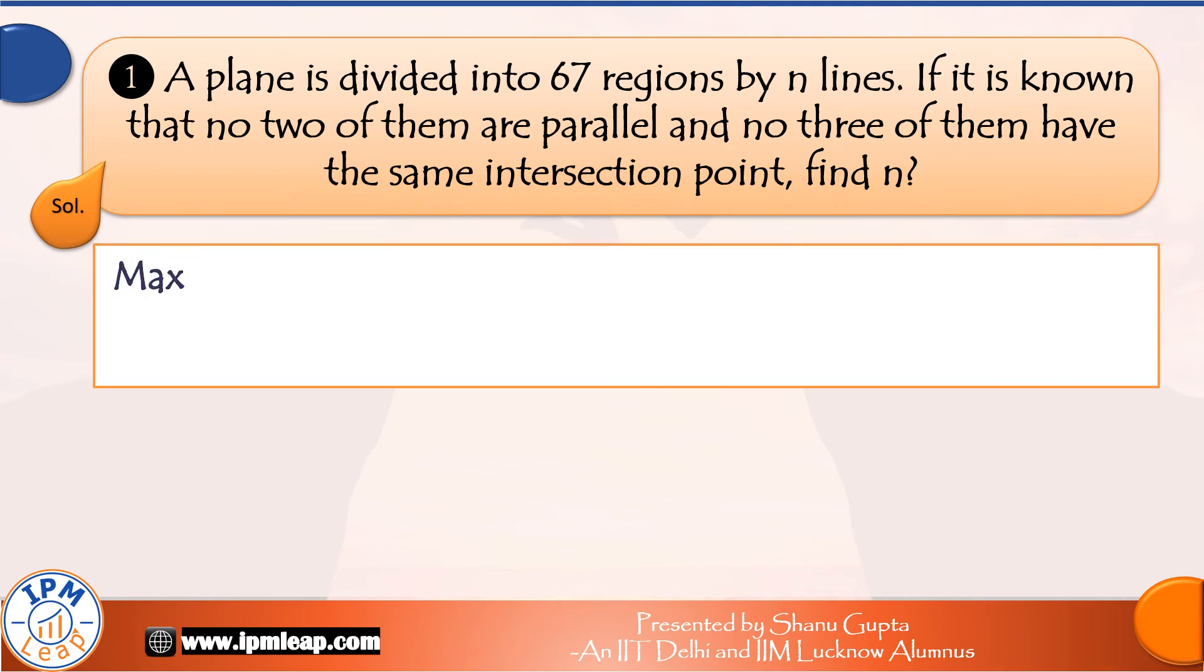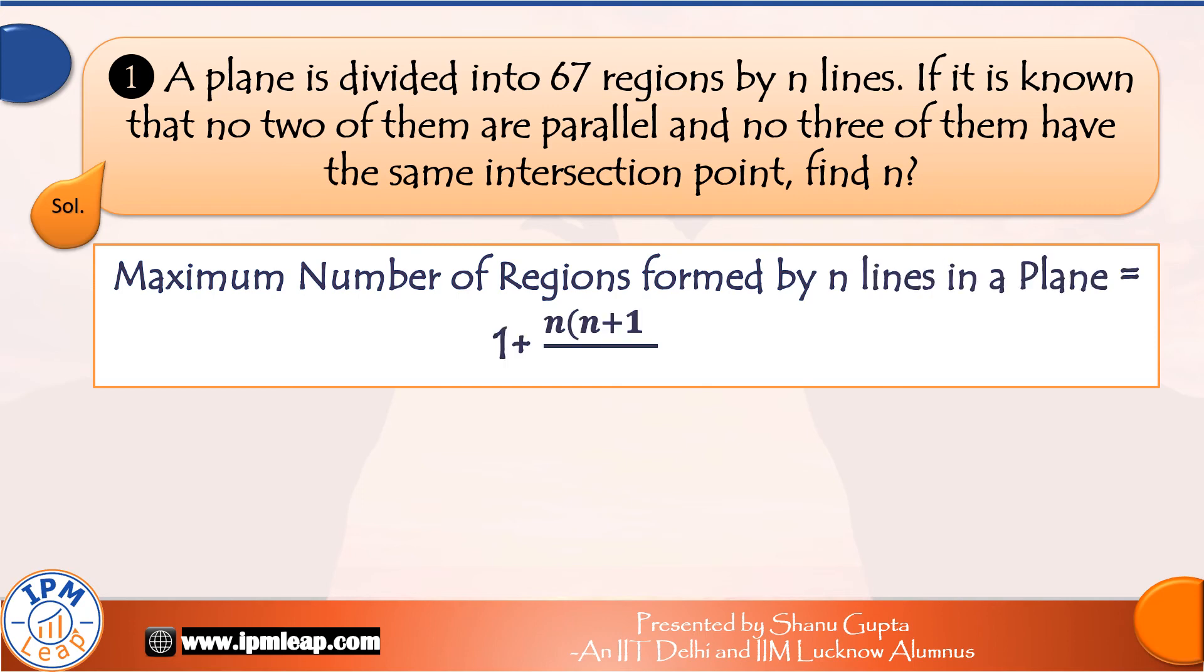We know this is our best case scenario. We have just learned that. The maximum number of regions formed in a plane by n lines is equal to 1 plus n into n+1 divided by 2. This is given to be 67.